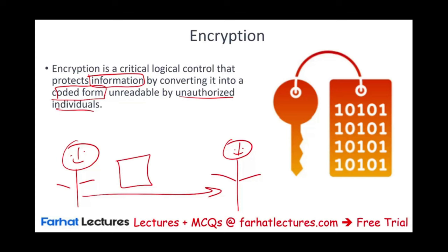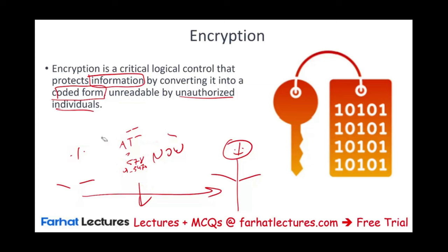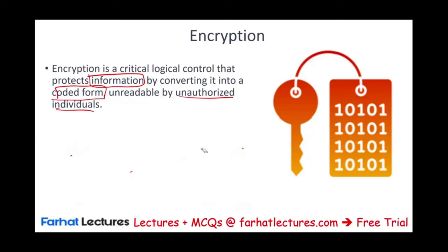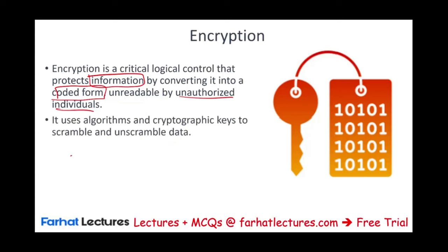They would send a letter containing numbers — for example: one, two, five, seven, eight, nine — where each number represents a coded letter. For example, A is number three, T is number seven, and C has a different number. The king would know how to decrypt those messages because he had the manual. But if the enemy intercepted the letter, they wouldn't know the message between the military commander and the king. That's what encrypting a message is. It uses algorithms and cryptographic keys to scramble and unscramble data — you need the technology to unscramble it.